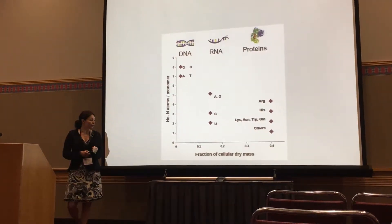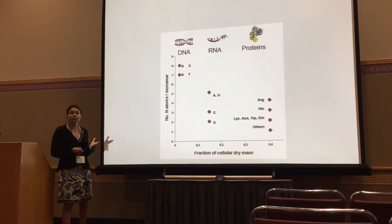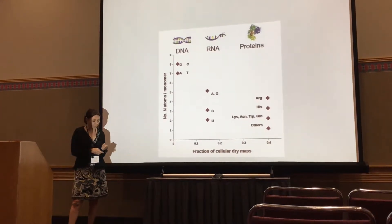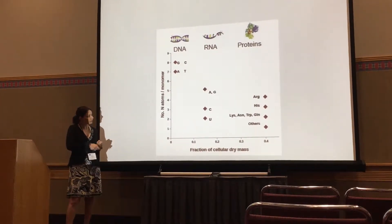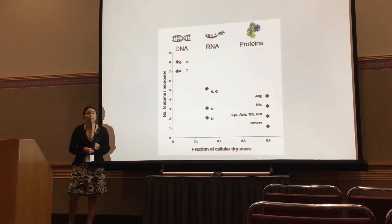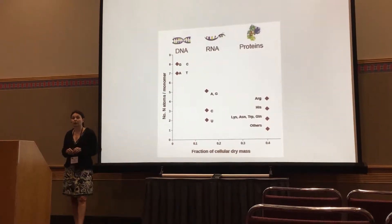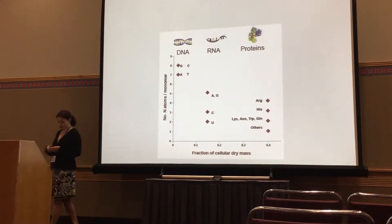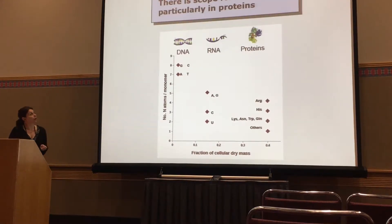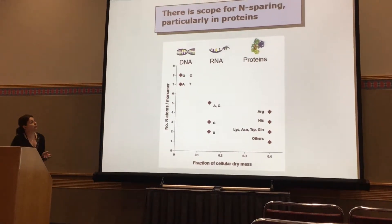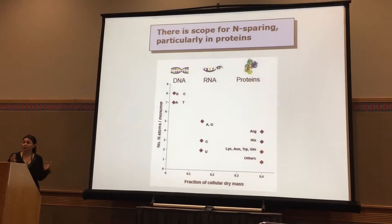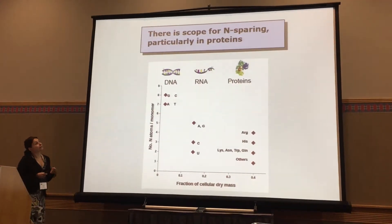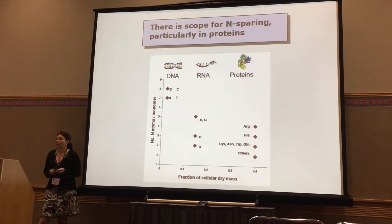On top of that, we can ask how much of the cellular dry mass these different moieties cover. We find that proteins cover about 40% of the cellular mass, depending on the organism. Therefore, we can conclude that there is scope for nitrogen sparing in the composition of proteins, and it is particularly relevant at the cellular level.